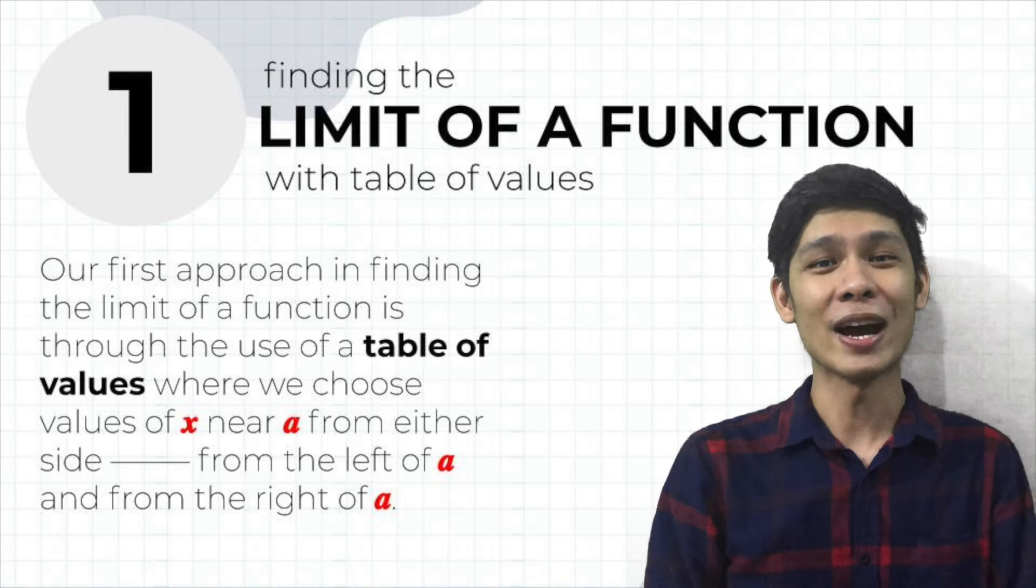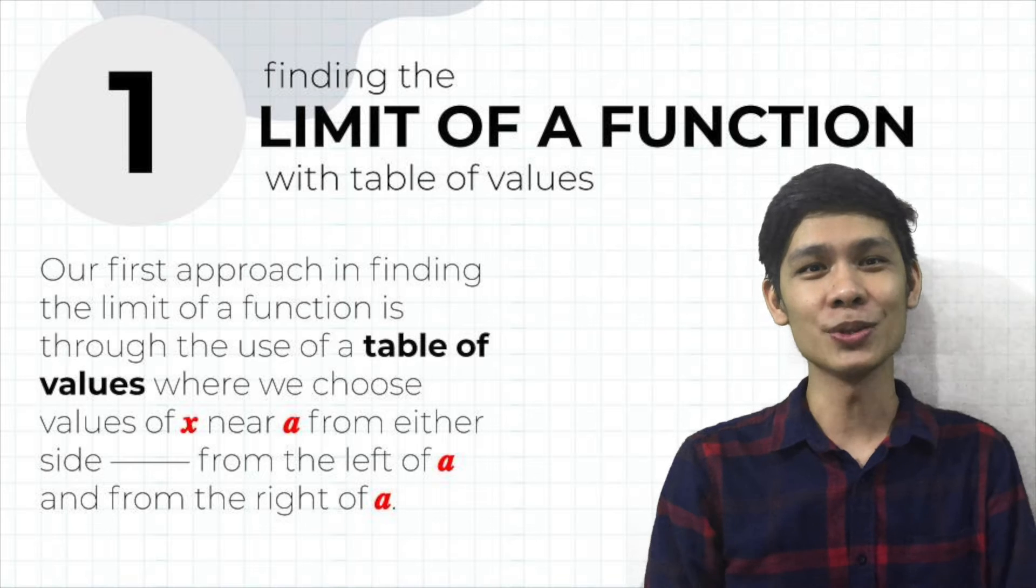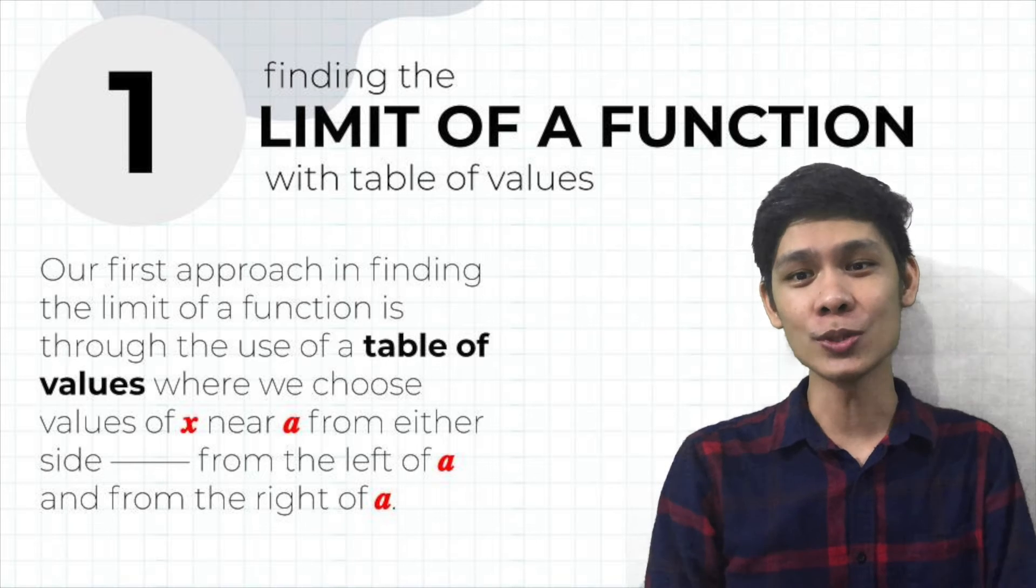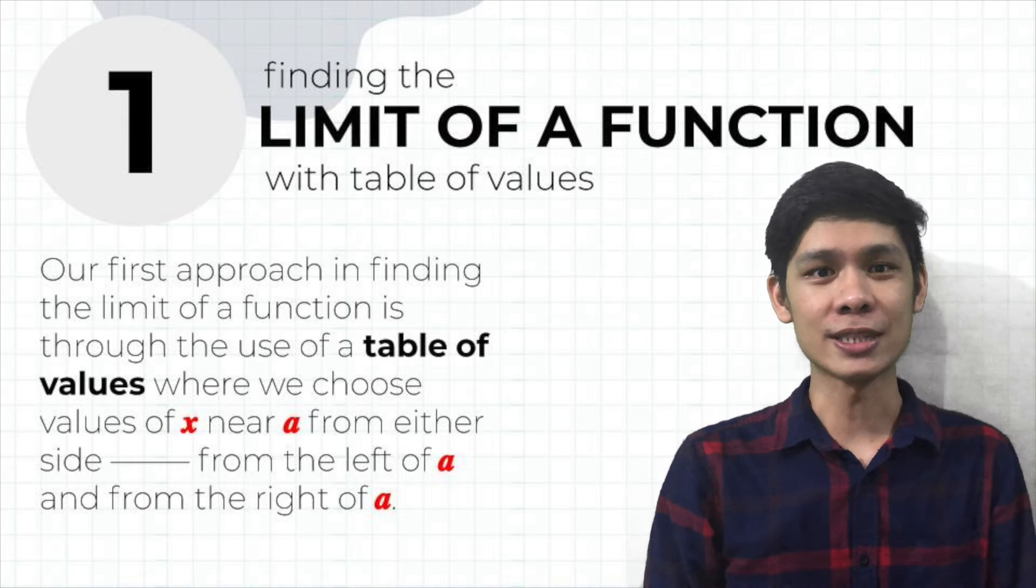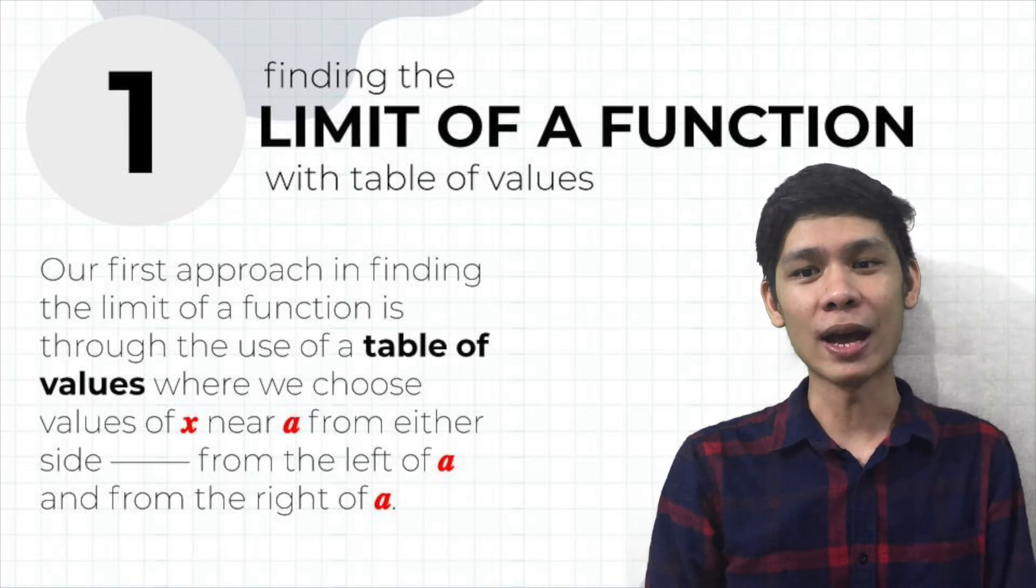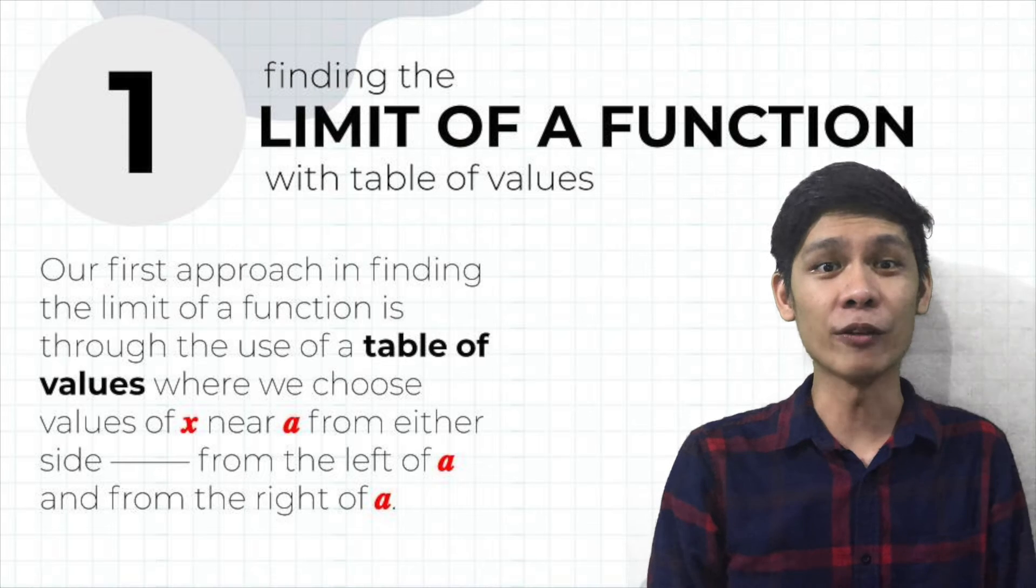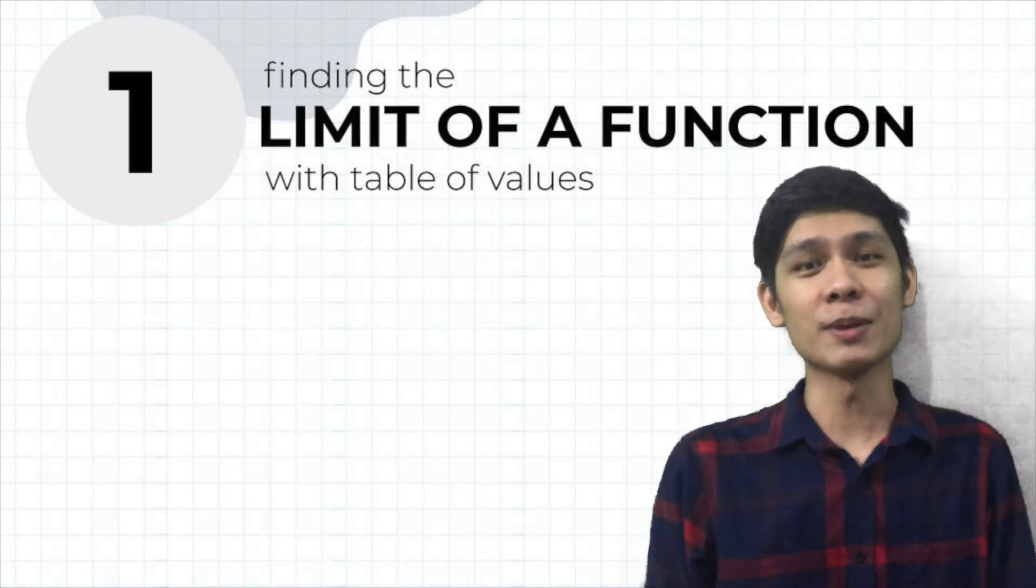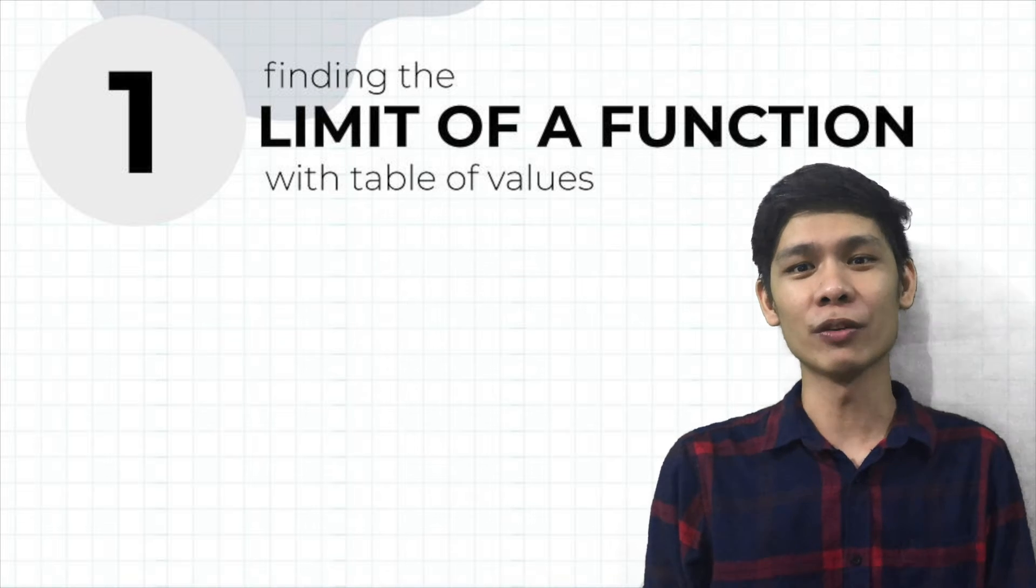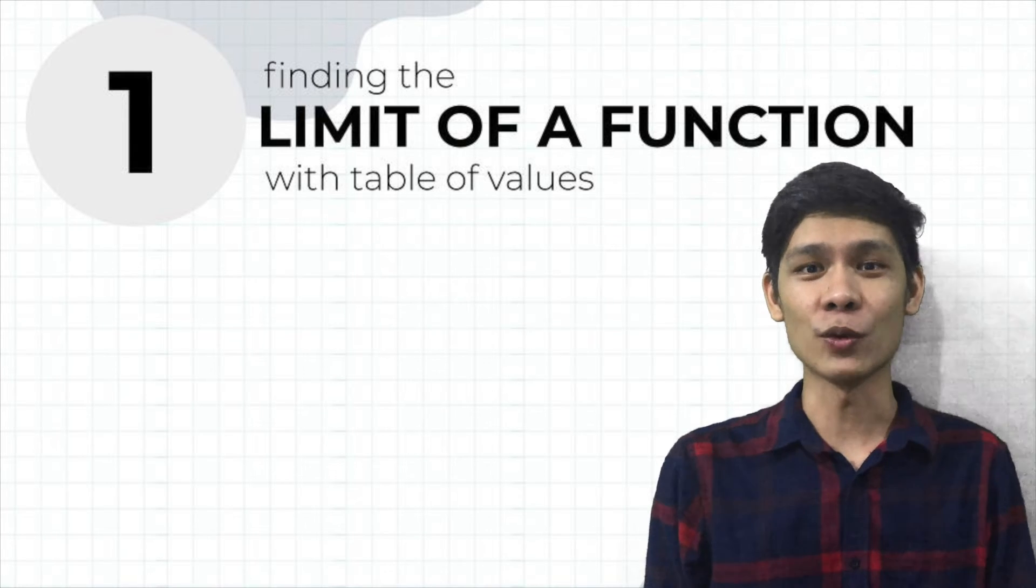Our first approach in finding the limit of the function is through the table of values where we choose values of X near A from either side. Meaning, we are getting values from the left of A and from the right of A. The question is, how do we find the limits of a function with a table of values? Let's discuss a few examples.